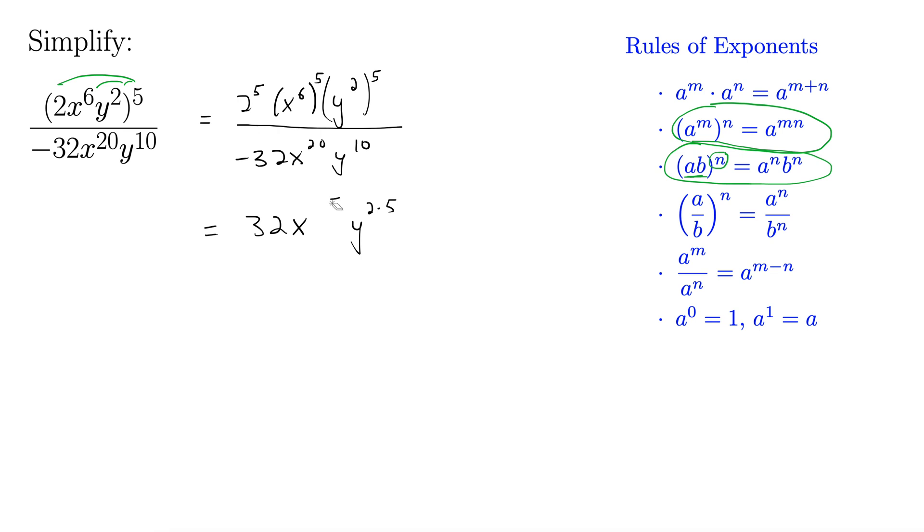So I'm just going to rewrite these here. 6 times 5 is 30. 2 times 5 is 10. So this gives us 30 and 10 here. The denominator is still the same old song and dance down here. Negative 32x to the 20, y to the 10th.